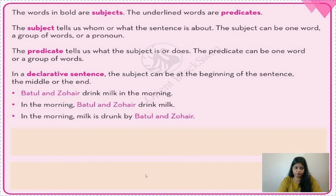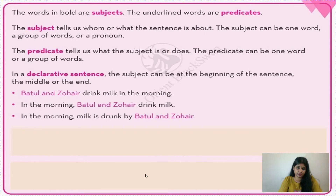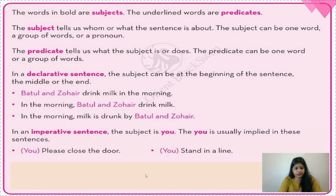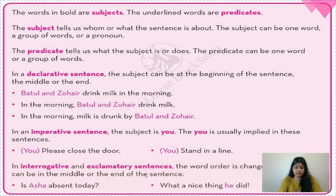In different kinds of sentences, subjects and predicates differ. In a declarative sentence, the subject can be at the beginning, in the middle, or at the end. Many students think the subject can only be at the beginning — that is not correct. For example, 'Batul and Zohair drink milk in the morning' — subject at the beginning. 'In the morning, Batul and Zohair drink milk' — subject in the middle. 'In the morning, milk is drunk by Batul and Zohair' — subject at the end. In an imperative sentence, the subject is always 'you,' which is hidden and implied.